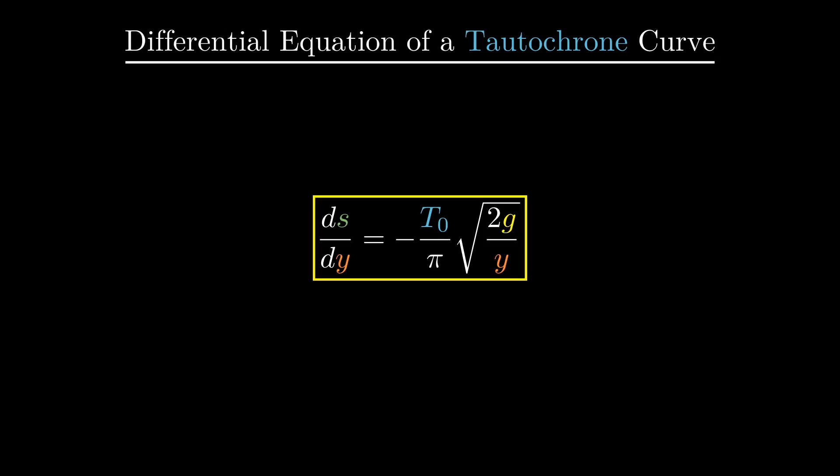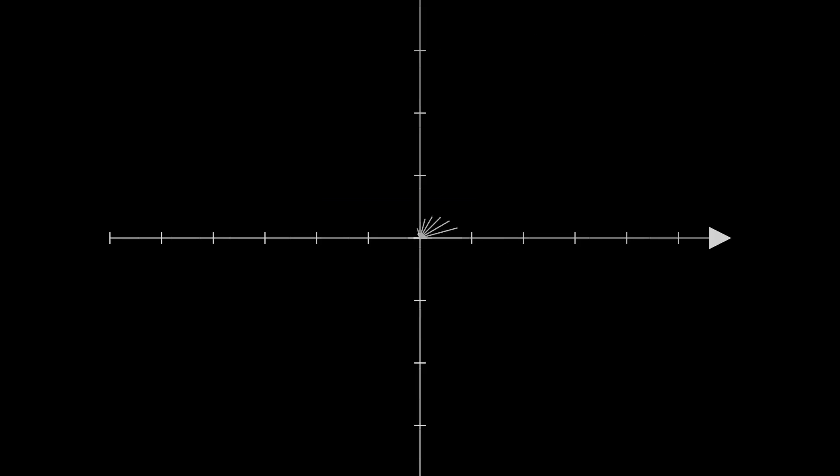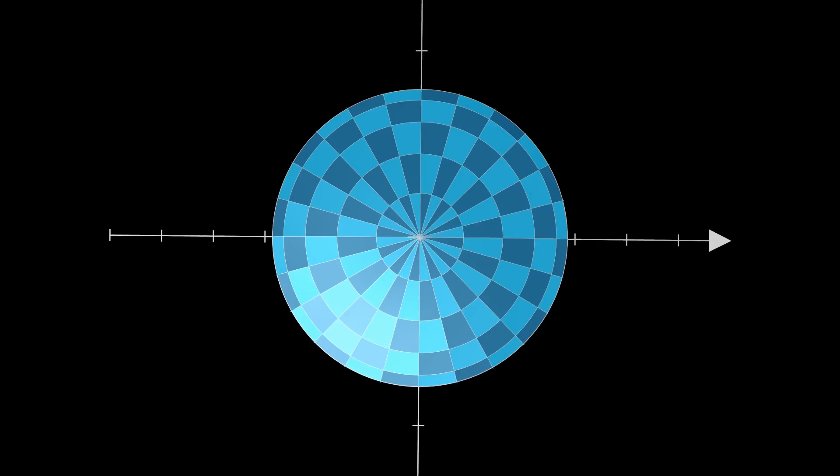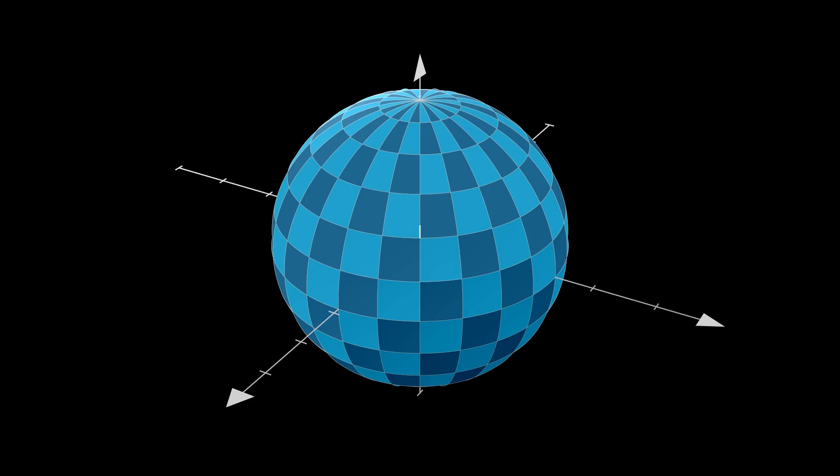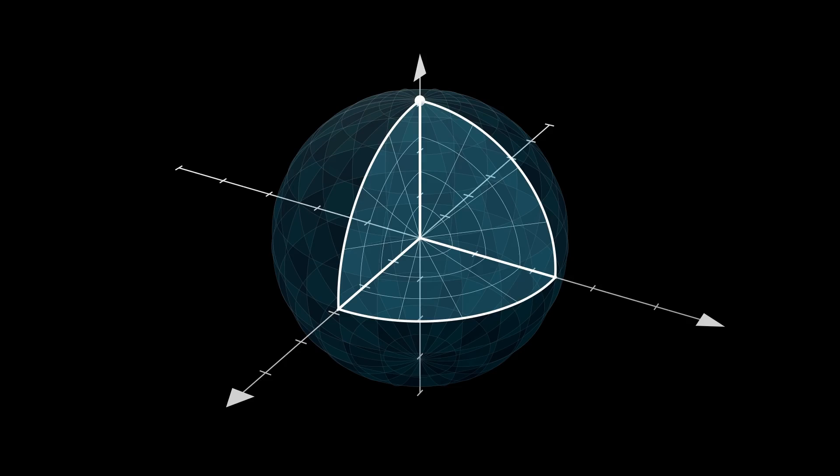We will now use this to find the tautochrone on a spherical surface. Just like the Cartesian coordinate system, we need three values to specify the location of a particle in a spherical coordinate system. Because the particle is always going to be on the surface of a sphere, that leaves us with two coordinates.